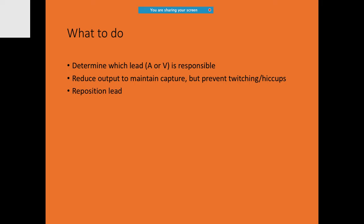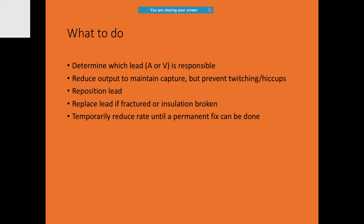Identify which lead is the culprit — A or V — and act accordingly. If the lead is fractured, change it. On a temporary basis you can reduce the rate until a permanent pacemaker implantation can be arranged.